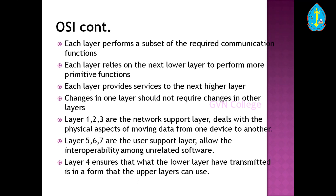It is a model for understanding and developing computer-to-computer communication architecture that is flexible, robust, and interoperable. It is not a protocol — it is the architecture of how the network works inside. Each of the seven layers performs a subset of the required communication functions. Each layer relies on the next lower layer to perform more primitive functions, and provides services to the next higher layer. Changes in one layer should not require changes in another layer. Layers 1, 2, 3 are the network support layers, dealing with physical aspects of moving data. Layers 5, 6, 7 are the user support layers. Layer 4 ensures that what the lower layers have transmitted is in the form that upper layers can use.